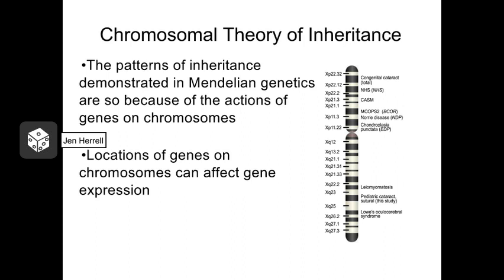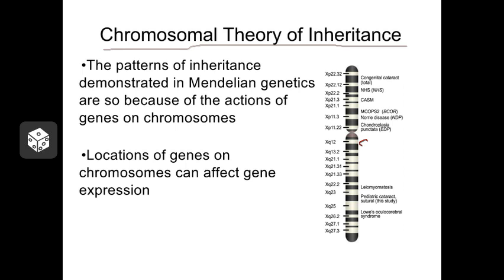In this chapter, we're going to discuss what's known as the Chromosomal Theory of Inheritance. This theory helps to explain how the specific chromosomes that carry certain genes, their specific locations on those chromosomes — which if you remember are referred to as a locus, or loci in the plural — and even the shape and size of the chromosomes themselves can affect how all genes are inherited.